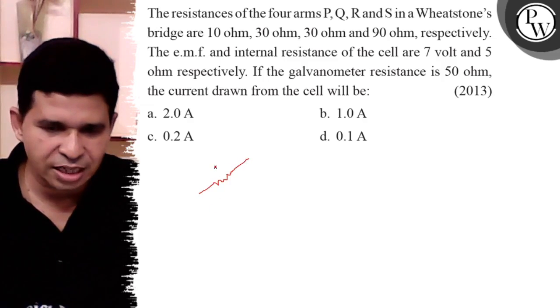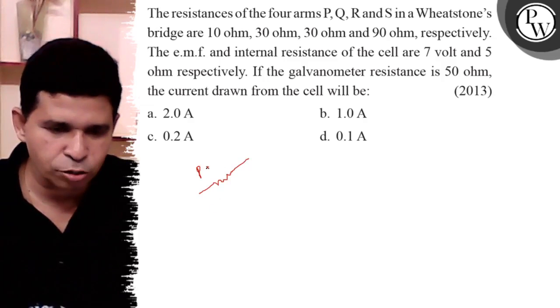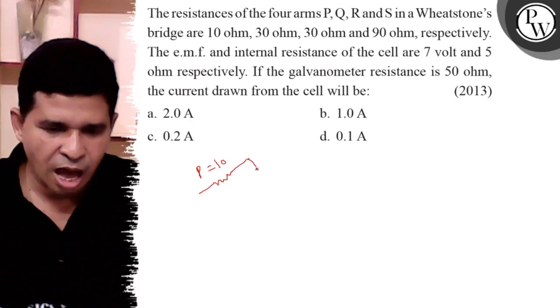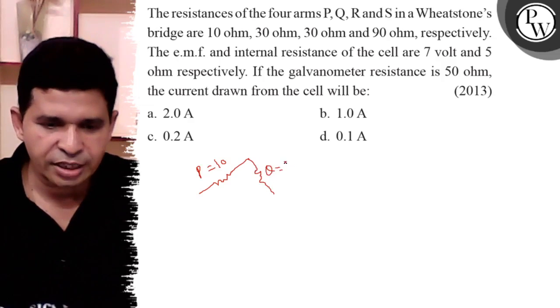It is the Wheatstone bridge. Here is P, P equals 10 ohm. Now here is Q, Q equals 30 ohm.